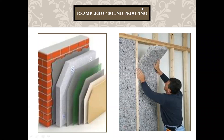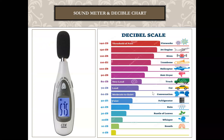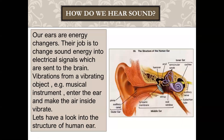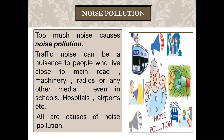That was our last topic today. We learned how we hear sound and the structure of the human ear — how sound travels inside the ear and reaches the brain, and how the brain interprets it. We also learned about noise pollution: too much noise causes it, and noise is basically irregular sound waves.